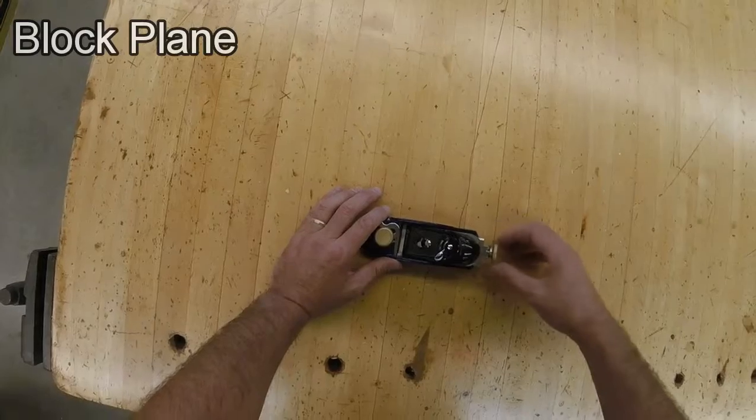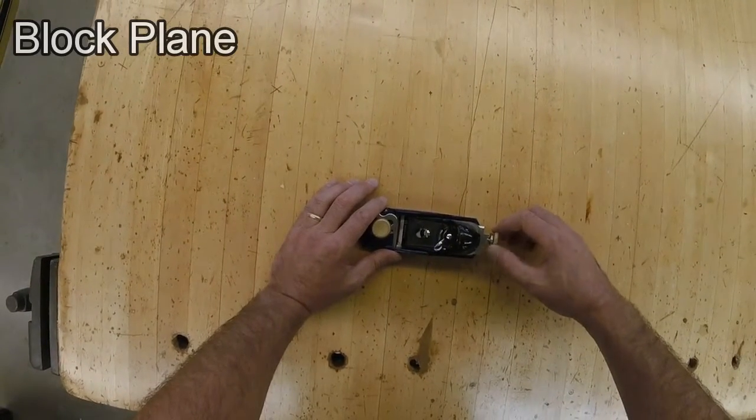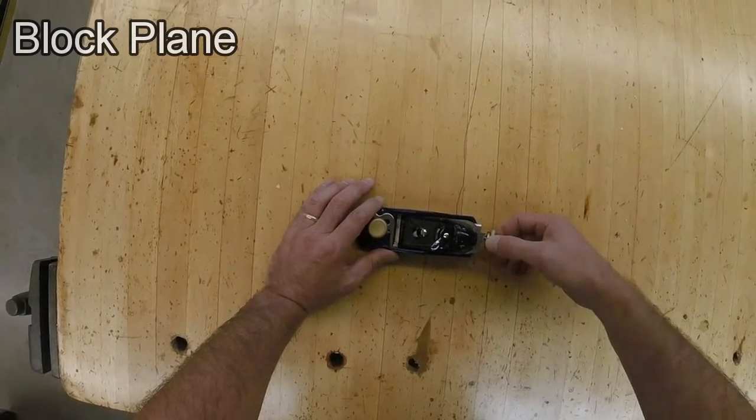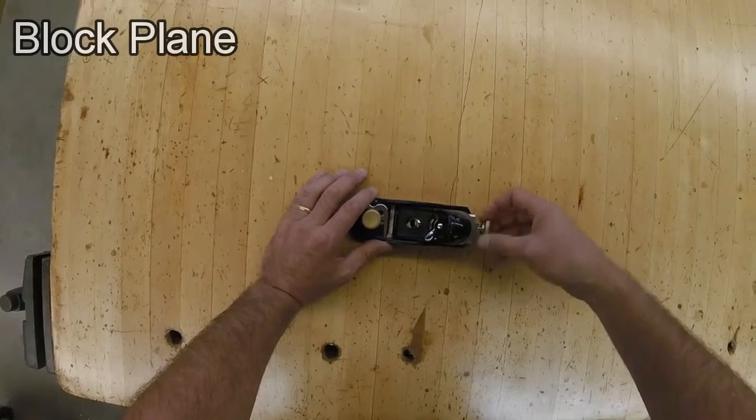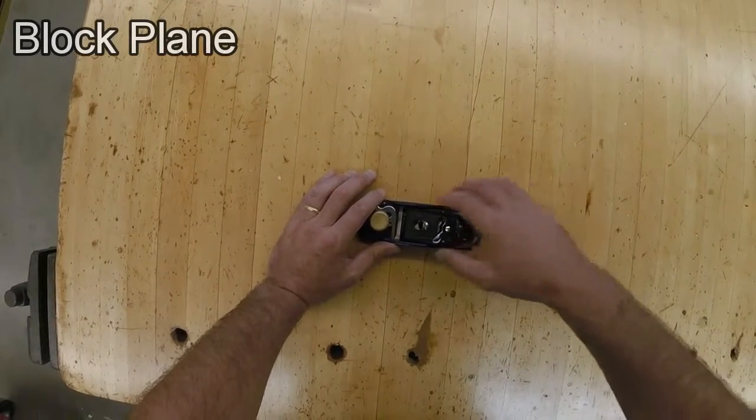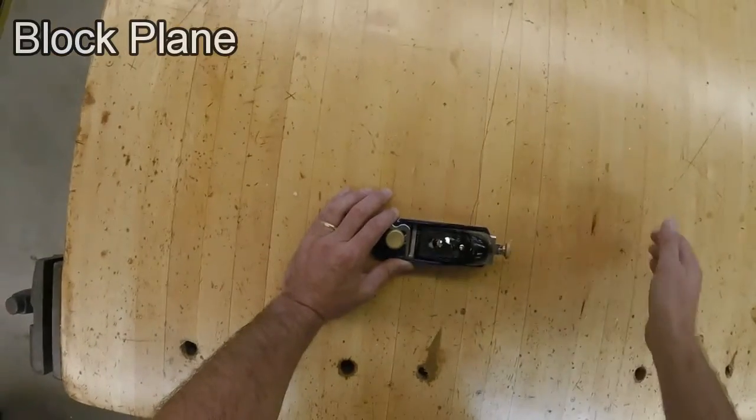It loosens the top plate. You can make the blade go farther forward by turning the screw clockwise, or you can make a shallower cut making the blade go back by turning that counterclockwise. Lock that lever when you're done.